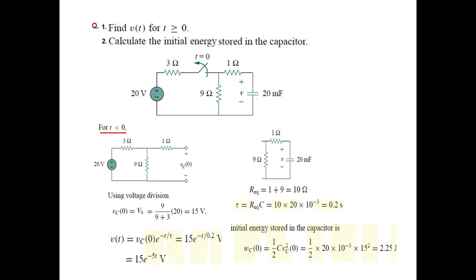Our initial energy stored in the capacitor is given by ωc which is 1/2 CV² or CV0². C is 20 millifarad and Vc we found to be 15 so 15 squared